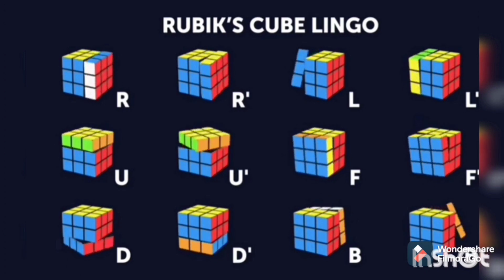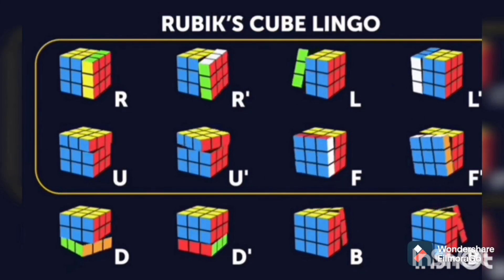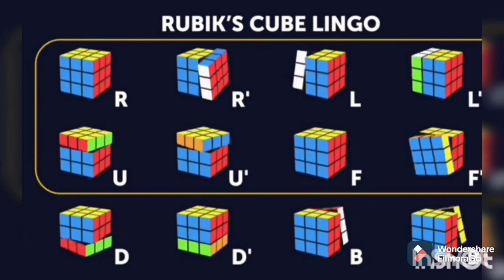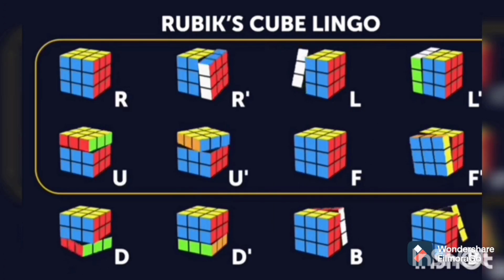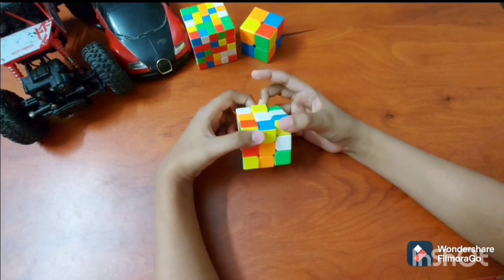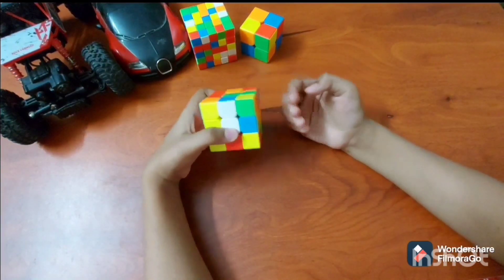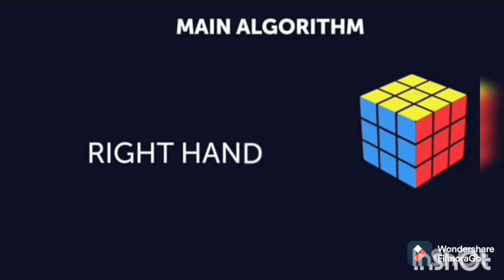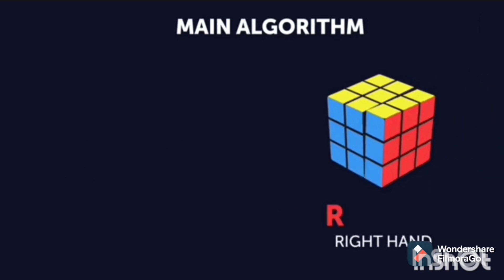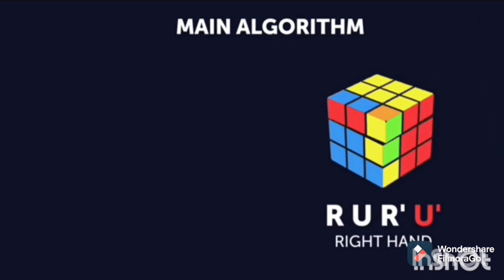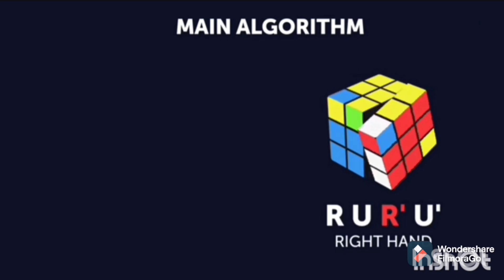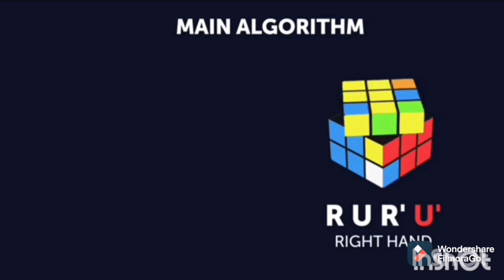Now you can see the yellow zone algorithms which we are going to use in our video to solve the Rubik's Cube. Now let's know the main algorithm. For the right hand: R, U, R', U'.